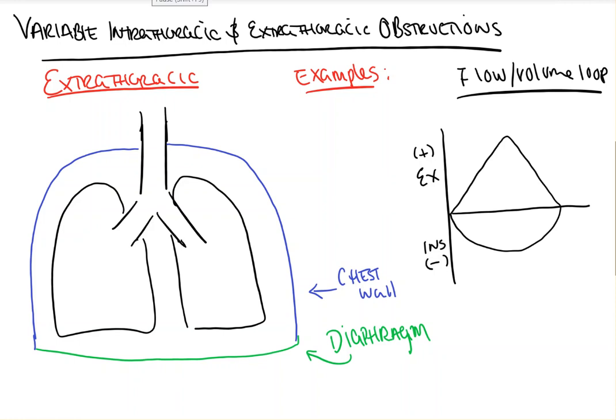Hi everyone. In this video from Count Backwards from 10, we're going to take a quick look at the differences between the variable intra- and extra-thoracic obstructions, examples of them, and how and why they affect our flow volume loops the way that they do. In part 2 of this video, we will take a look at fixed obstructions and obstructive and restrictive lung diseases.